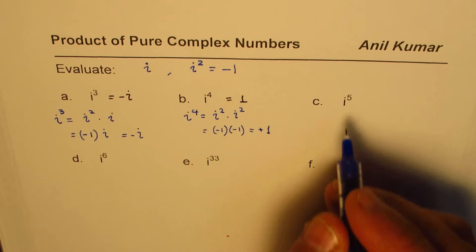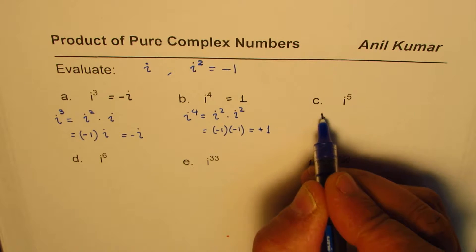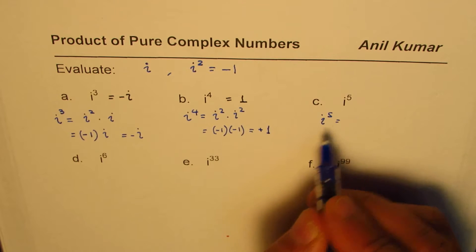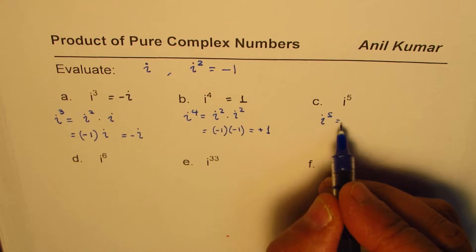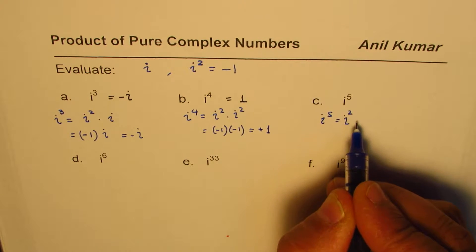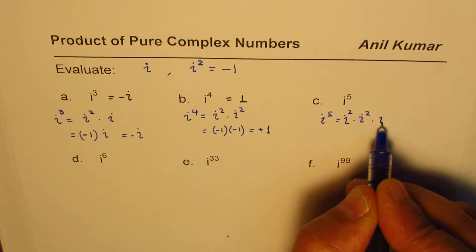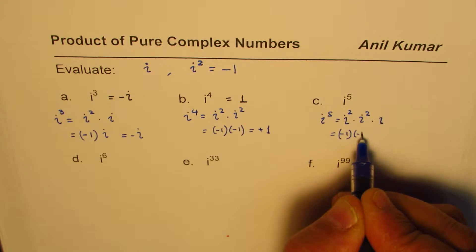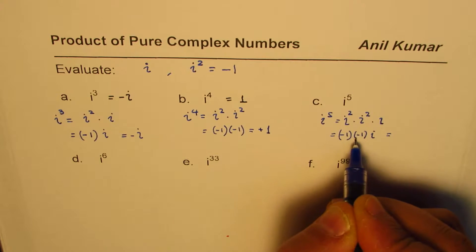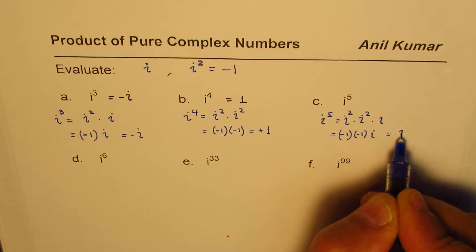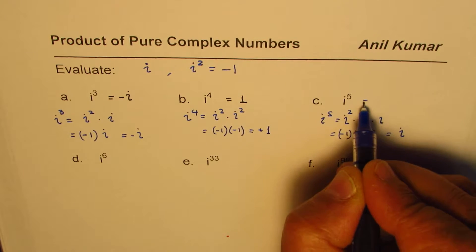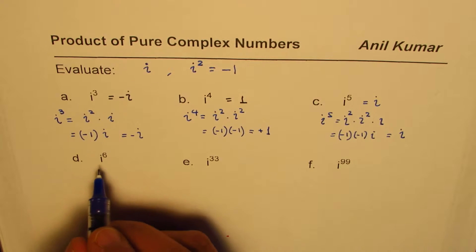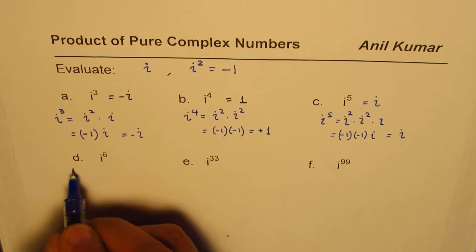Let's follow the same strategy for i to the power of 5. We write it as i squared times i squared times i. That gives minus 1 times minus 1 times i. Since minus 1 times minus 1 is positive 1, the result is simply i. So i to the power of 5 equals i.